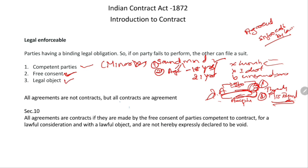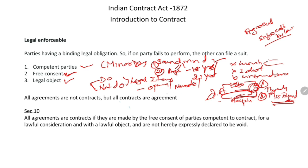The legal object: the subject matter of the contract should be legal. Whatever the person wants to do or not to do should be a legal item — not opium sale or a murder contract, as those are illegal objects. To call it legally enforceable, the object of the contract should be legal — for some goods or services. The objective must be legal; it should not be to kill a person or something illegal.